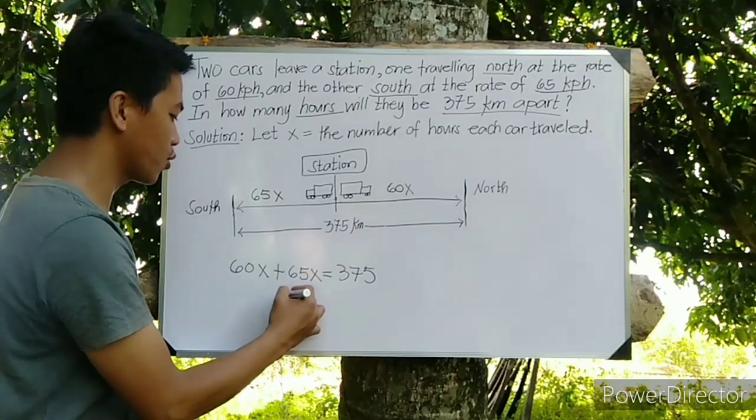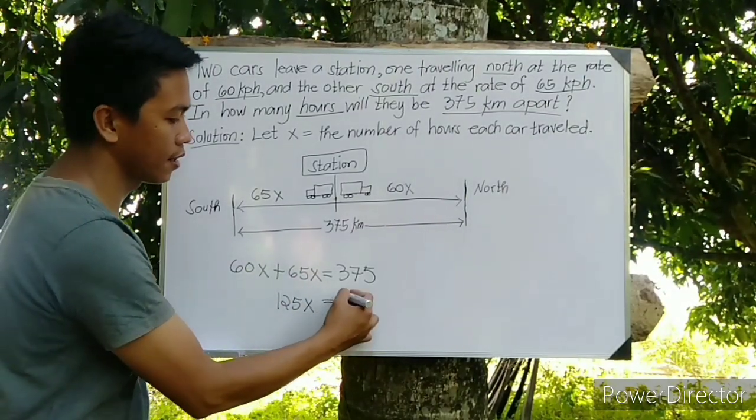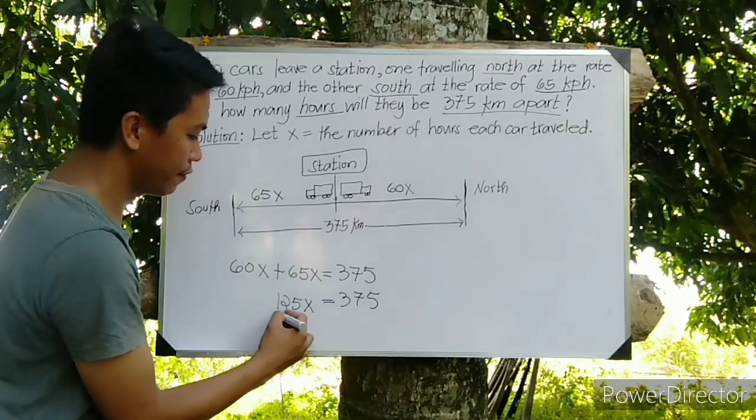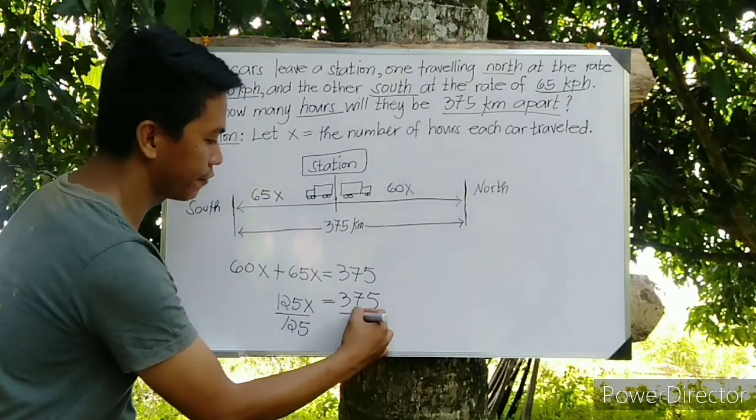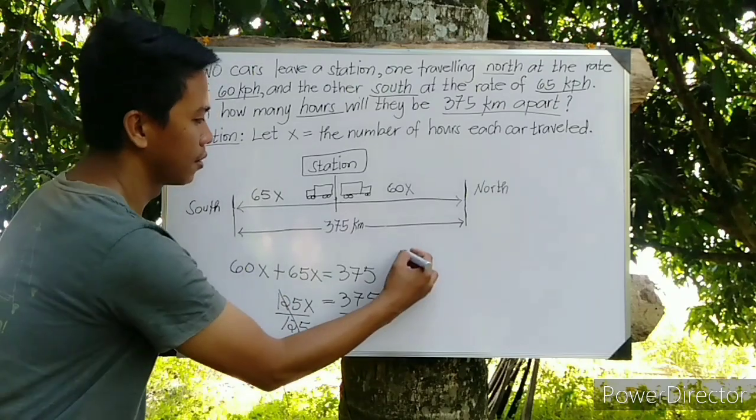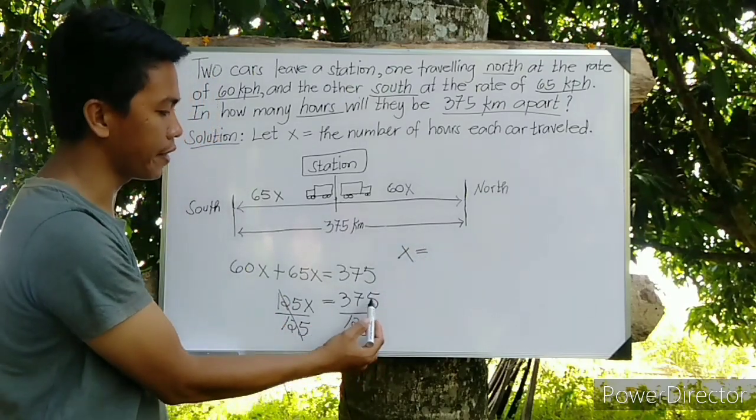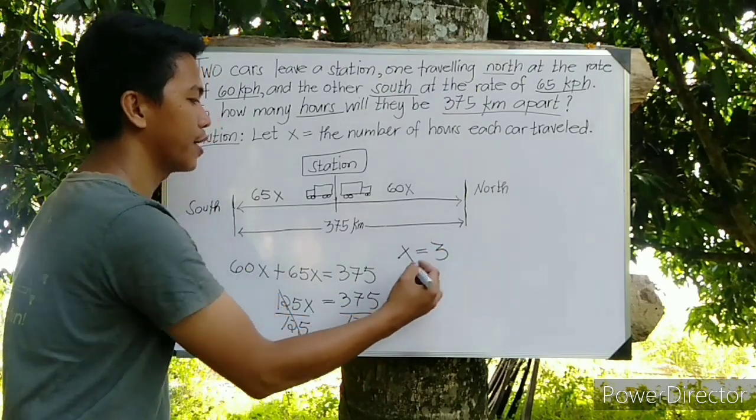Divide both sides by 125 to find the value of X. Cancel out, bring down X. So we have 375 divided by 125 equals 3.